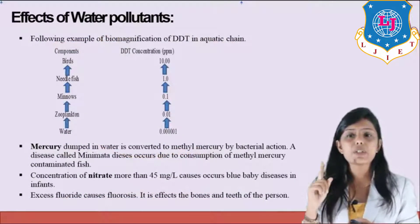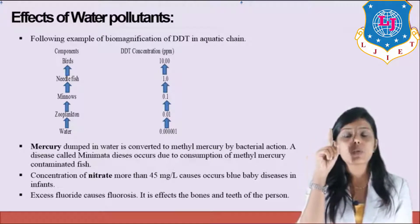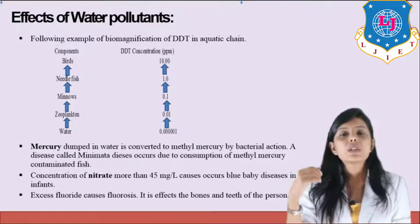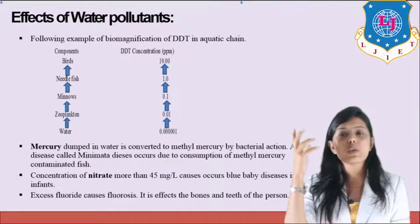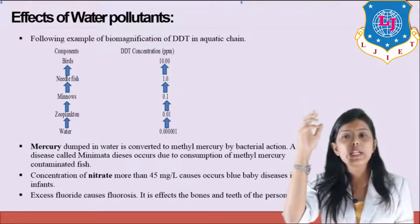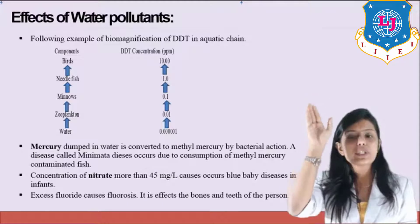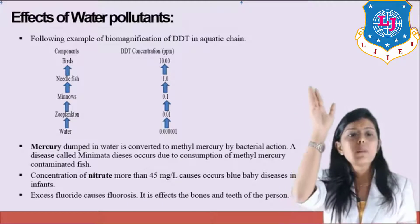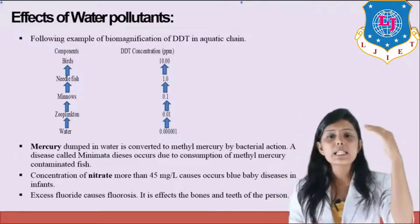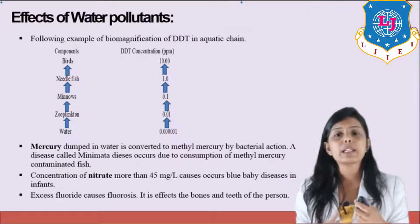For example of biomagnification: in water, the concentration of a toxic compound is 0.00001 ppm. As it is accumulated in zooplankton, the concentration becomes 0.01 ppm. From zooplankton it goes to minnows, where concentration is 0.1 ppm. Needle fish eating minnows accumulates a concentration of 1 ppm. When a bird eats the needle fish, the concentration becomes 10 ppm. At each successive level of the food chain, the concentration of toxic compound increases — that is biomagnification.